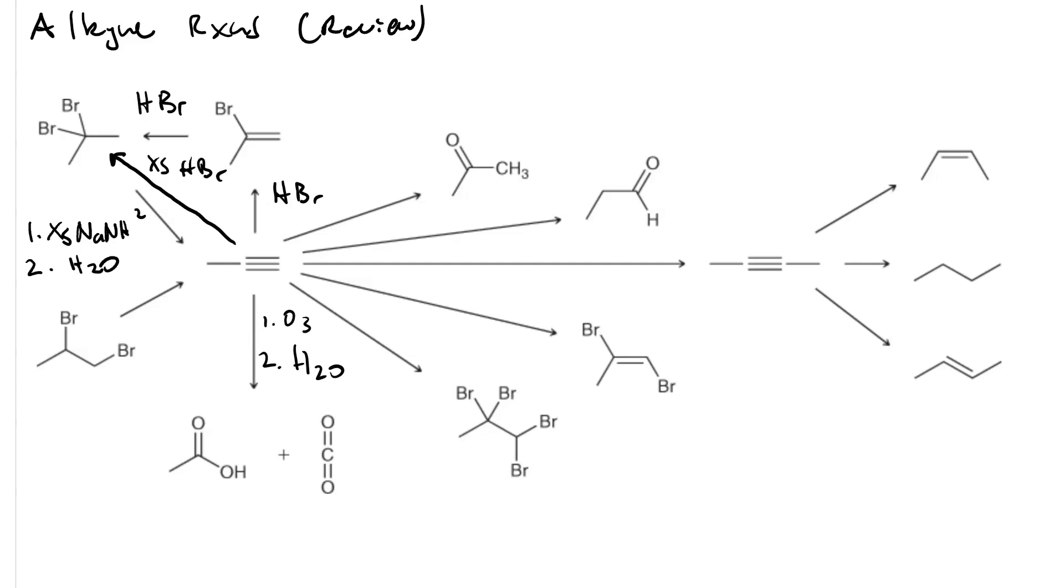To go from the alkyne to the methyl ketone, that's acid-catalyzed hydration. So we'll use mercuric sulfate, H2SO4, sulfuric acid, and water.